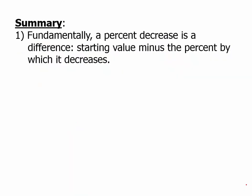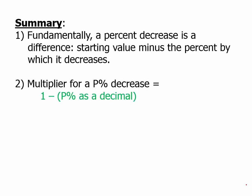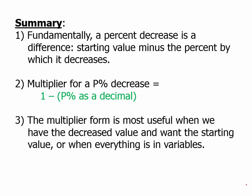Fundamentally, percent decrease is a difference: the starting value minus the percent by which it decreases. We can find the multiplier, and the rule for this is to change the percent to a decimal and subtract that from 1. The multiplier form is most useful when we have the decreased value, when we want the starting value, or when everything is in variables.